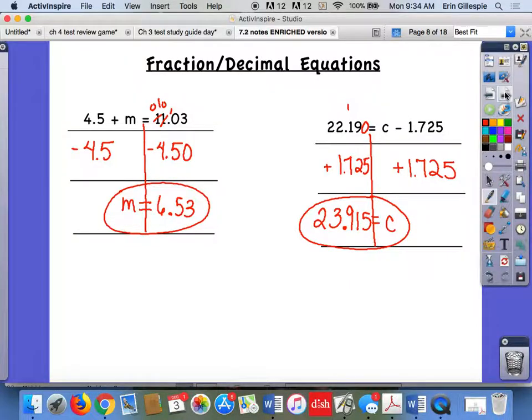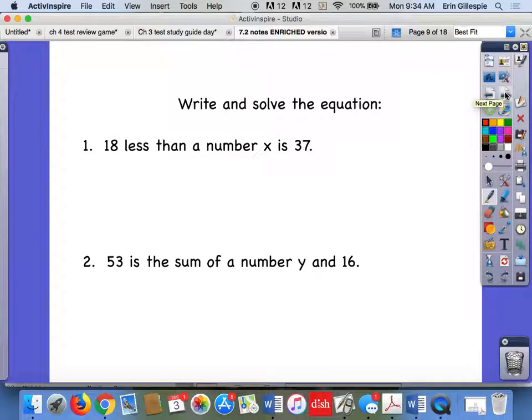All right. Last little thing we need to cover for today would be kind of putting together yesterday's lesson and today's lesson. So writing the equation and then solving it yourself. So number one, we have 18 less than a number X is 37. Remember the key we said is find that word that's indicating the equal sign. That kind of helps split it up for you. So in this case, is means equals. So I know my equal sign is right there. And I know the only thing on the right side of my equal sign then is that 37.